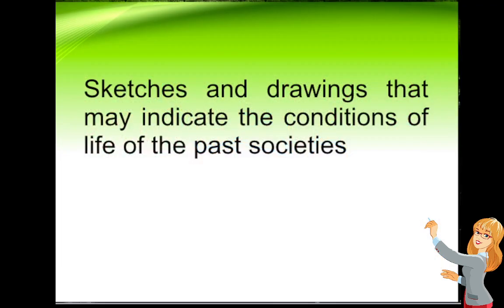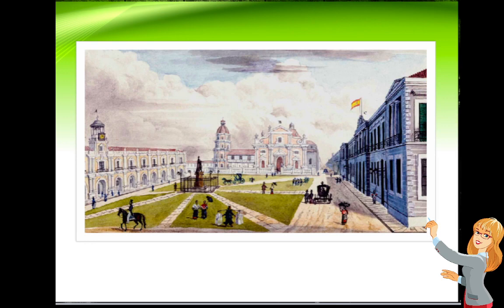Sketches and drawings may indicate the conditions of life in past societies. One sketch shows Intramuros, where at the center is the Manila Cathedral, on the right is the Palacio del Gobernador, and on the left is the Ayuntamiento — which was like the city hall at the time, as 'Ayuntamiento' means city council. The general appearance of these buildings remains similar today.